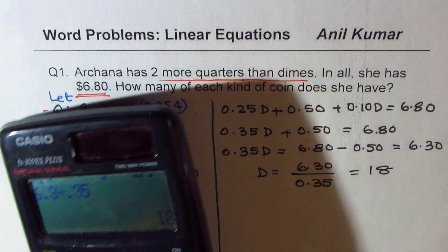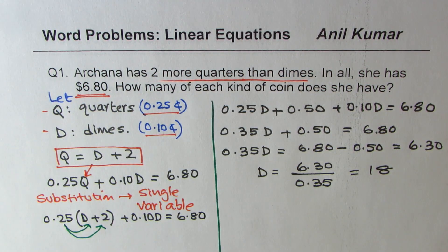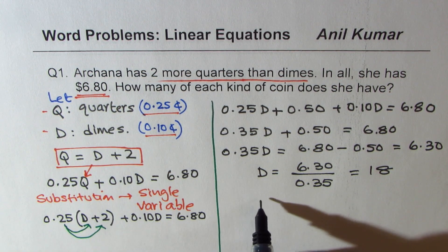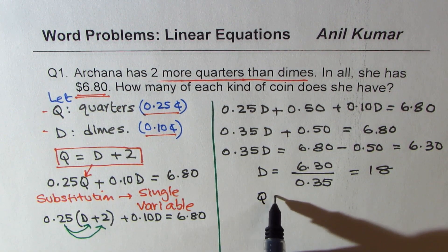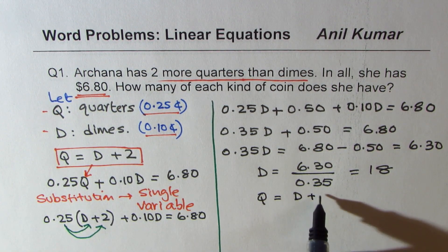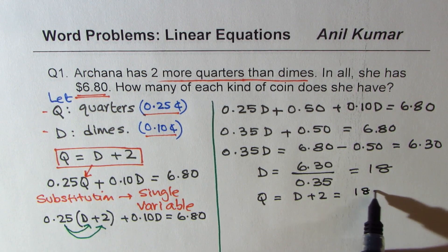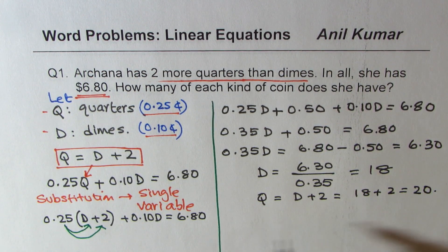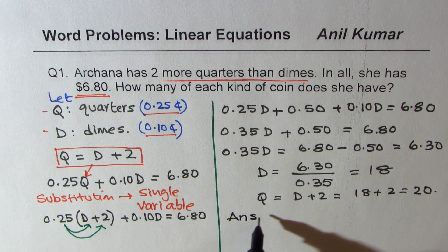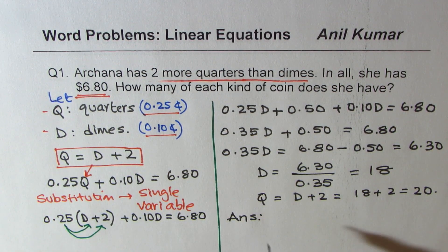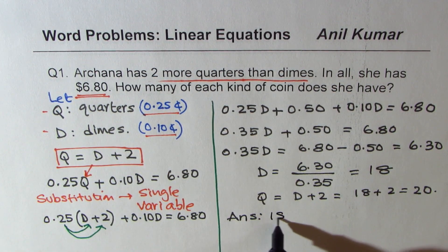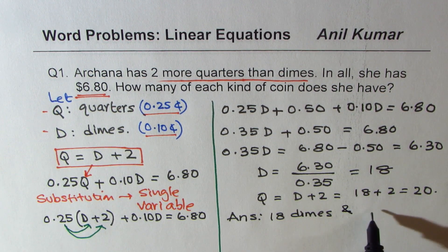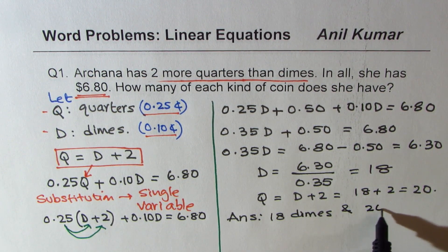We get 18 as the number of dimes. So if dimes is 18, how many quarters? Quarters equals dimes plus 2, which is 18 plus 2, which is 20. So we have our answer: Arjuna has 18 dimes and 20 quarters.